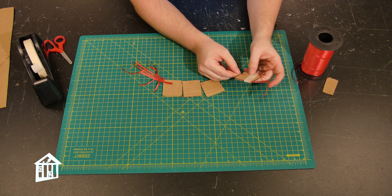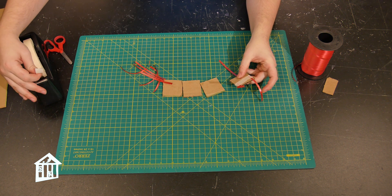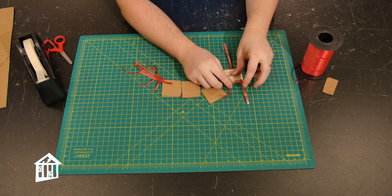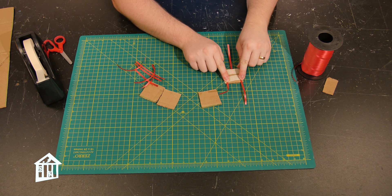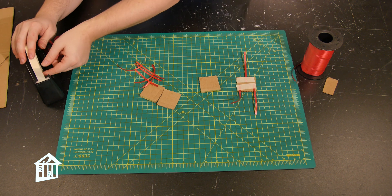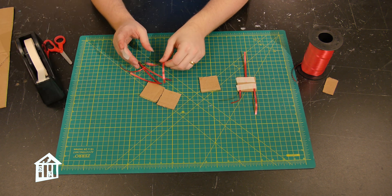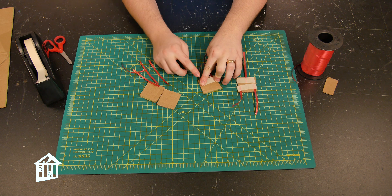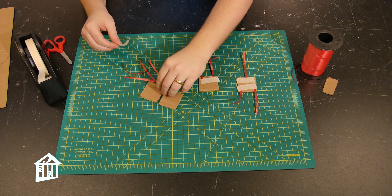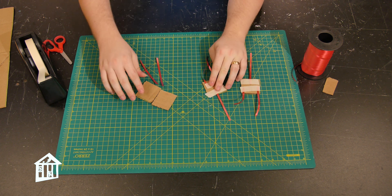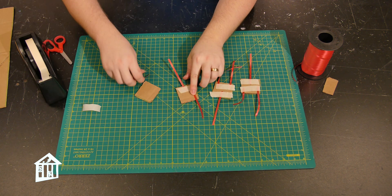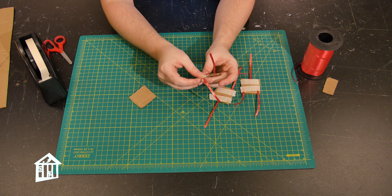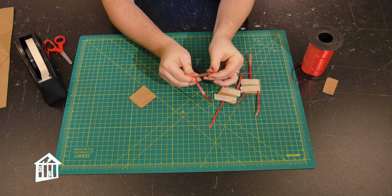So two on the corners on one side, and then one in the middle on the other side. And you're going to do that for all, well, actually not all four. You're going to do that for three of your cardboard squares here. Not all four. There's going to be one without any.